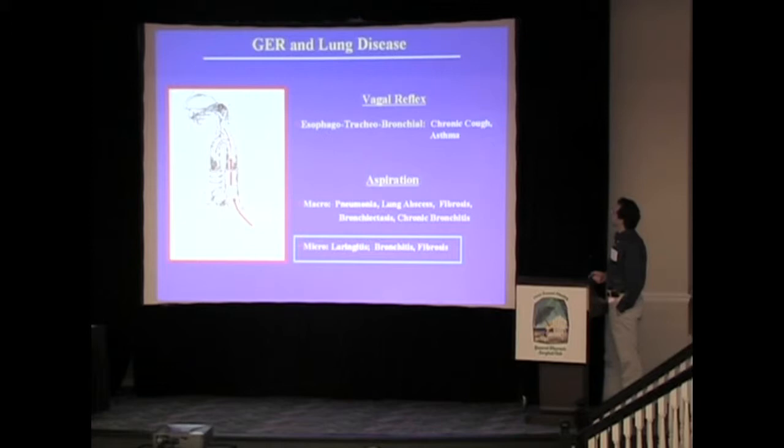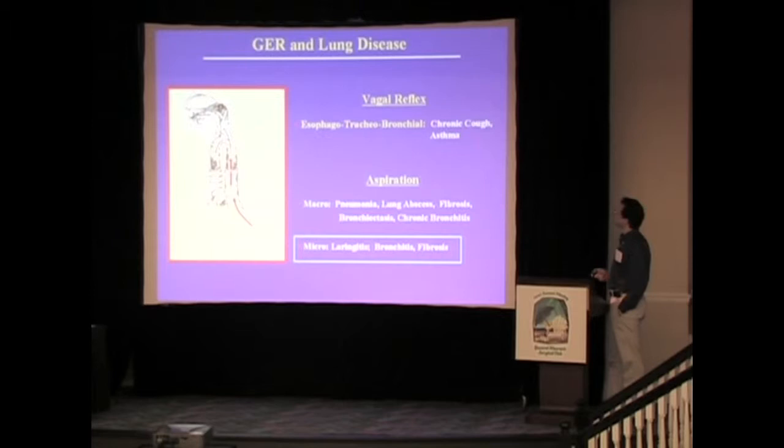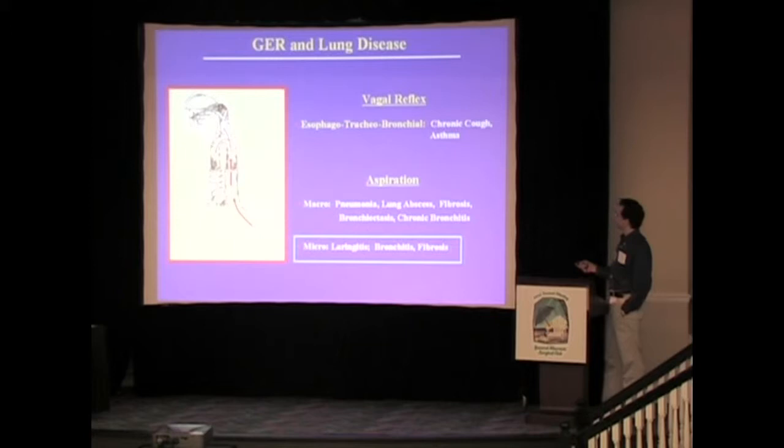The association between lung disease and gastroesophageal reflux is either through a vagal reflux pathophysiology with an esophageal-tracheal-bronchial mechanism, associated mostly with chronic cough and asthma, or through aspiration, which may be macro or micro. Macro aspiration is associated mostly with pneumonia, lung abscesses, fibrosis, bronchiectasis, and chronic bronchitis. Micro aspiration is associated mostly with laryngitis, bronchitis, and also fibrosis.